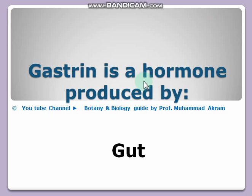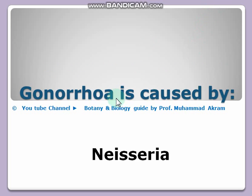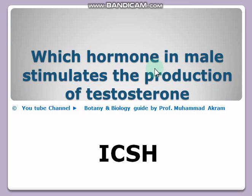Gastrin is a hormone produced by the gut — the right option is gut. Gonorrhea is caused by Neisseria — this disease is caused by this organism.